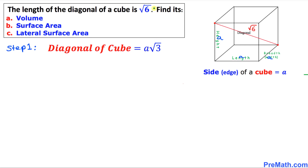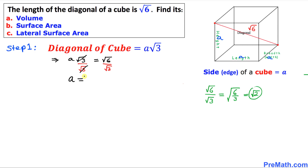In step number one, we know that the diagonal of a cube is a times square root of 3. This is the formula, and we have been given the length of the diagonal which is square root of 6. So we write a times square root of 3 equal to square root of 6, and we isolate 'a' by dividing both sides by square root of 3. The two radicals cancel out, so 'a' turns out to be equal to square root of 2.